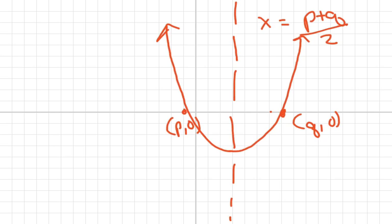So here's a picture of what I'm talking about. P and Q are your x-intercepts, and your axis of symmetry is where you add these two and divide by two.